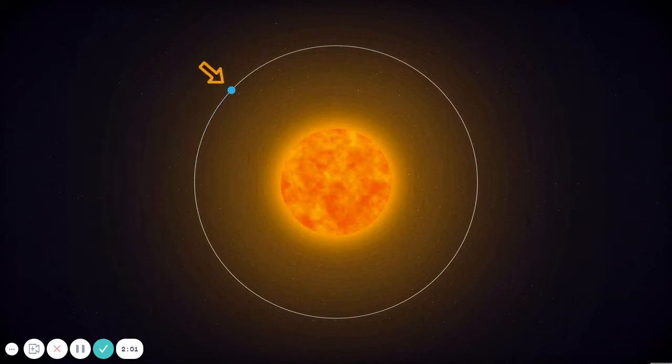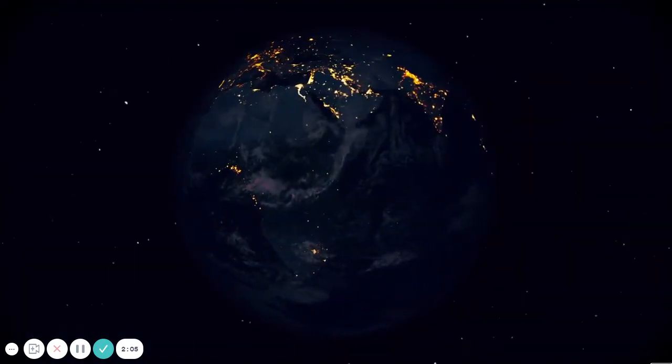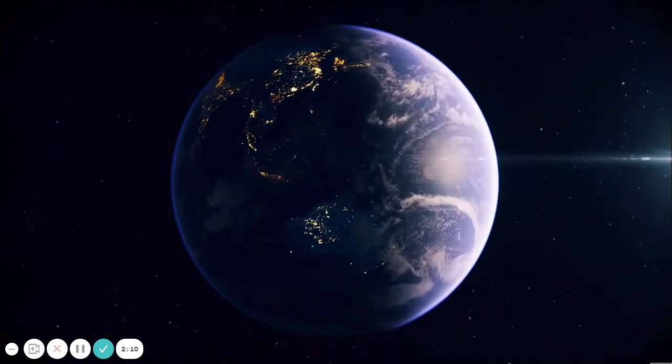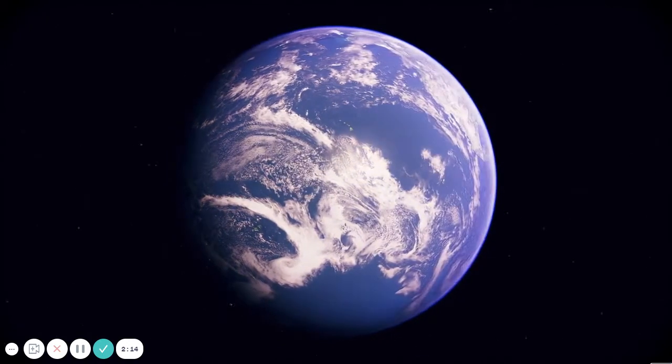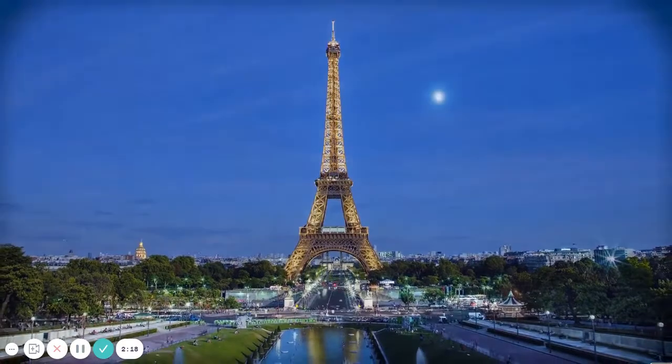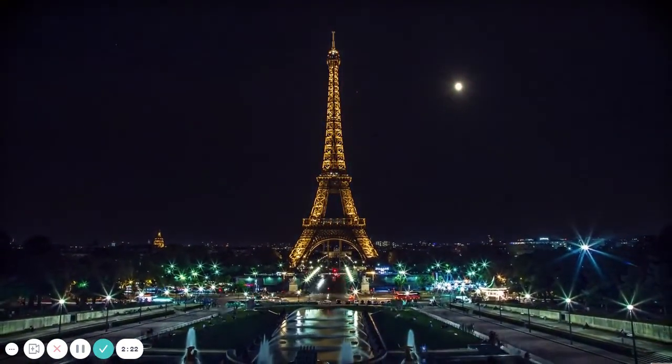While the Earth is orbiting the Sun, it is also spinning around, making one full spin every day. As it spins, only half the Earth faces the Sun at one time. When your part of the Earth faces the Sun, it's getting light and that's daytime. And when it spins away, that part is dark, making it nighttime.